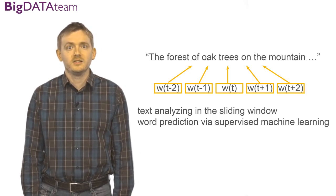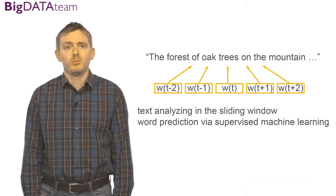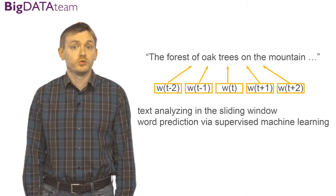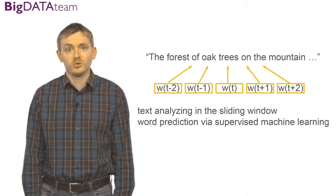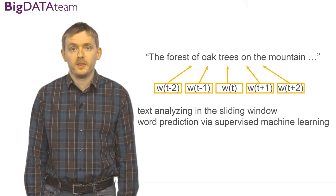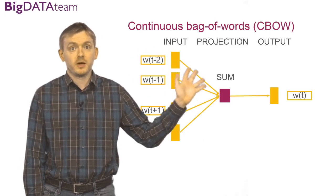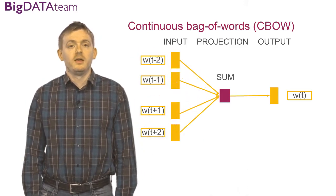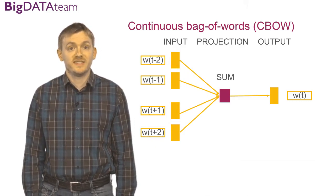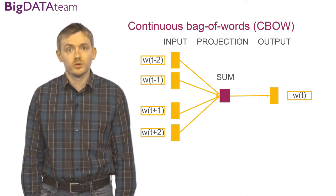What you are doing is called word prediction via supervised machine learning. In more detail, there are two statistical models inside the Word2Vec algorithm. The first model is called continuous bag of words. This model predicts a word which is in the center of the sliding window, given all the surrounding words.